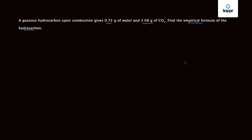First we will write the general reaction corresponding to the combustion of a hydrocarbon. Let our hydrocarbon be CₓHᵧ, which is in the gaseous state. This reacts with O2, which is also in the gaseous state, to give CO2, which is also in the gaseous state. On the left hand side we have X atoms of carbon, so here it will be X. We also have Y atoms of hydrogen.